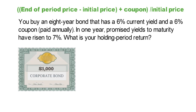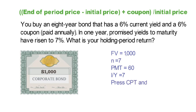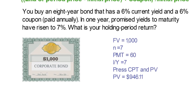Now I'm going to use the Texas BA2 Plus financial calculator. Enter FV equals 1,000, N equals 7, PMT equals 60, and I/Y equals 7, then press CPT and PV. You will get a selling price of $946.11.